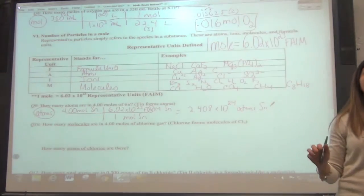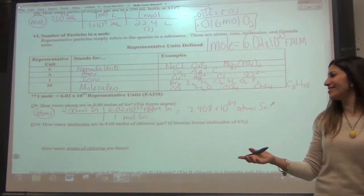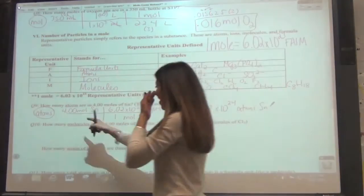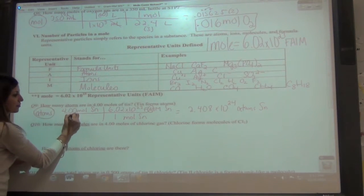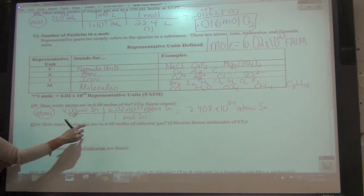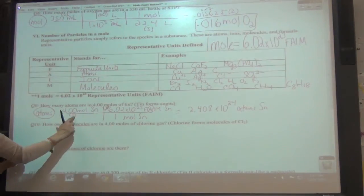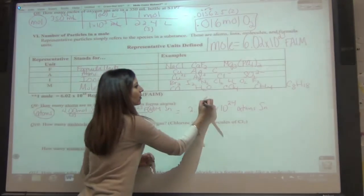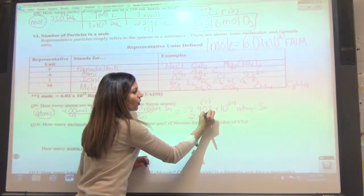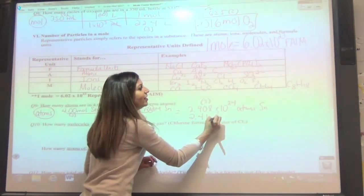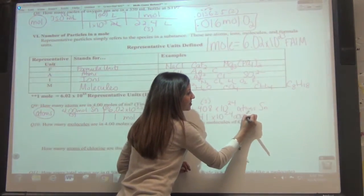Now that answer isn't done yet because we have to do our sig figs. How many sig figs in 4.00? Zeros to the right with a decimal — so 3. And 6.02? That zero is trapped, so 3. We've got 3 and 3, so we round to 3 sig figs, which makes it 2.41 times 10 to the 24th atoms of tin.